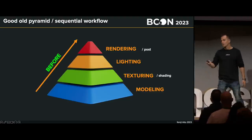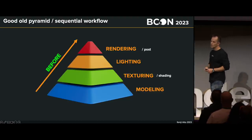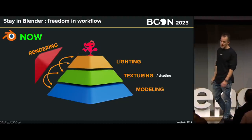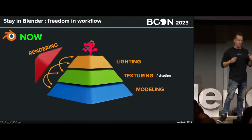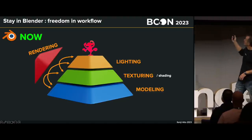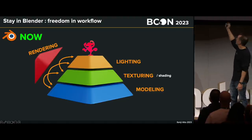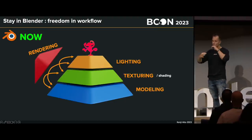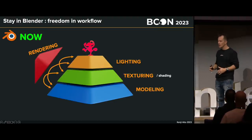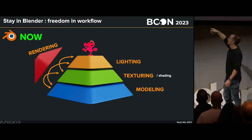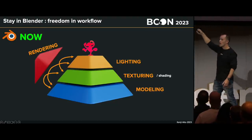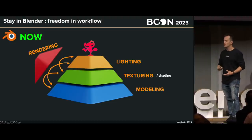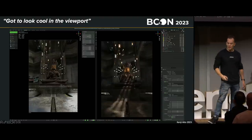Before I had this picture of a sequential workflow — from modeling to rendering, step by step. Now that I'm really focusing and staying inside Blender, I realize I can be much more free. I can start modeling, put a few lights, and the perception of the volume is totally different — it's amazing. You can then texture and go back and forth. At all times you have rendering happening because you have EEVEE and Cycles, so you have visual feedback of what you do. This really speeds up the creative process.